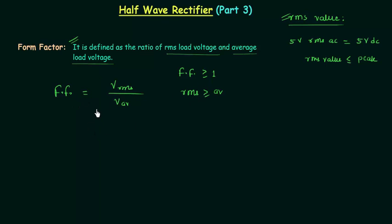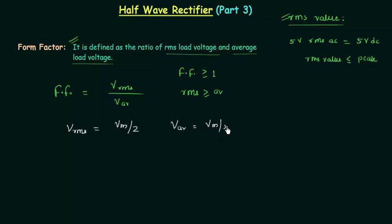Let's find out the form factor for the half wave rectifier. We already know the RMS value of load voltage is equal to Vm divided by 2, and the average value of load voltage is equal to Vm divided by pi. So form factor is equal to (Vm/2) divided by (Vm/pi), which equals pi divided by 2.